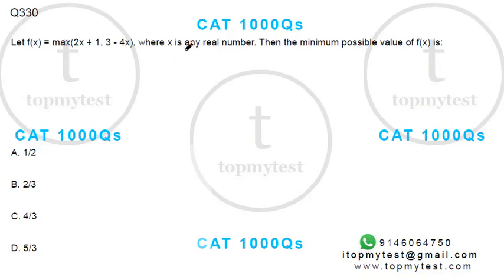Alright, this is a question which came in CAT previously, pretty simple question, let's see. Let f(x) = max(2x+1, 3-4x), where x is a real number, then the minimum possible value of f(x) is how much?